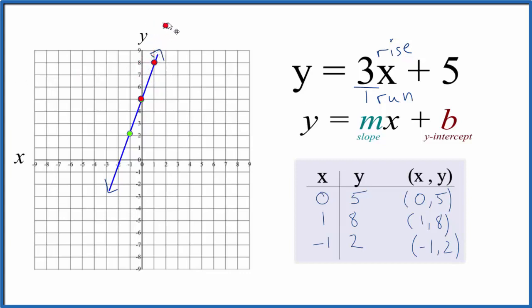We could go up 1, 2, 3 and over 1, but we've run out of graph paper. So let's go back to the y-intercept and go the opposite direction.